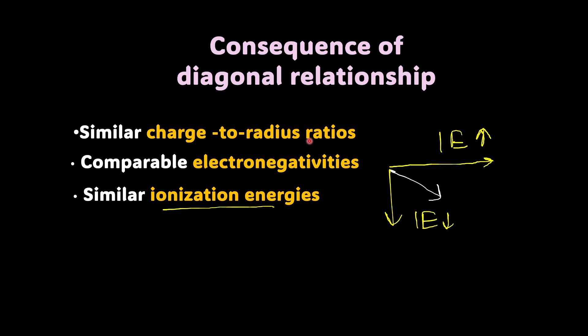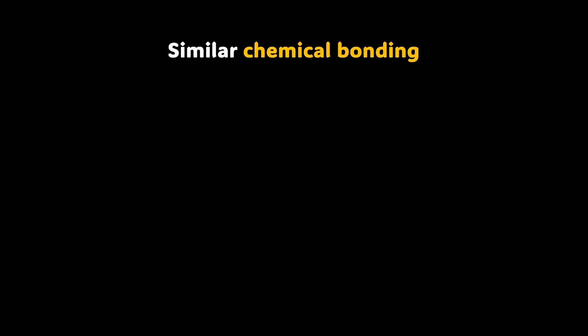Now, interestingly, as a result of this similar charge to radius ratio, electronegativities and ionization energies, what we see is a very similar chemical bonding. When I say chemical bonding, what I mean is the nature of the compound. For example, whether it is ionic, covalent or amphoteric, that is kind of very similar. And when we talk about the solubilities, that's also similar, the ability to form complexes and so forth. So that all comes in chemical bonding.